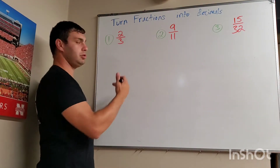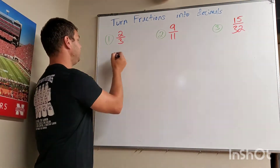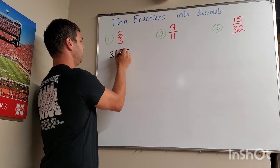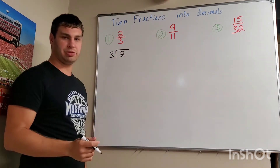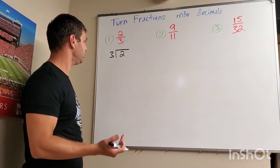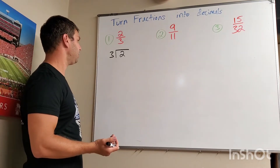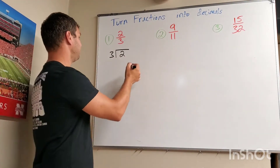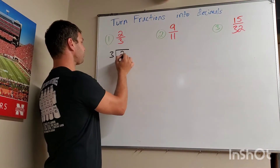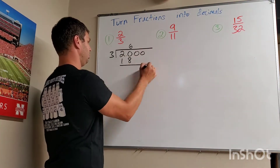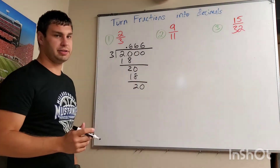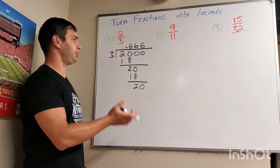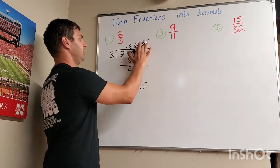First, we have to do 2 divided by 3, which means that if you remember back to elementary school, we need some long division — that's what we're doing here. 2 divided by 3. We all know how to do long division, so I'll spare you and do this in fast motion. And you can see that we get the same thing, 0.6 repeating, or 0.66666 going on forever.